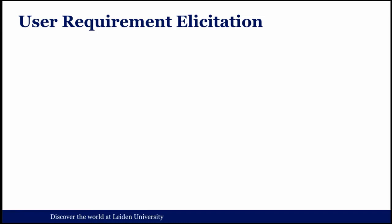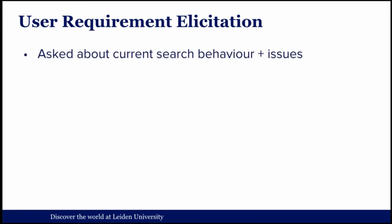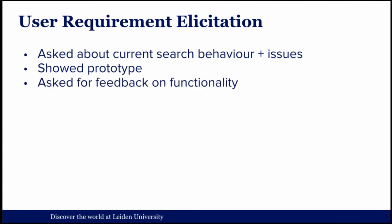The first thing I wanted to do was user requirement solicitation — see what they actually need. I put them all in a room and asked them about their current search behavior and issues, which was quite useful, and then showed them a prototype of the system. From personal experience in web development as well as research in other humanities fields, it seemed that humanities scholars specifically have difficulty putting their needs into words, so it's much easier to show them a prototype that doesn't work well and have them criticize it. I then asked for feedback on the functionality — what they liked, what they didn't like, and what they wanted to add.